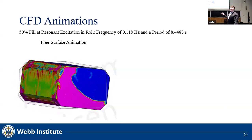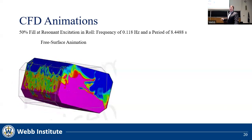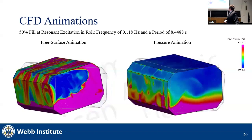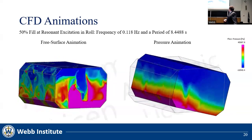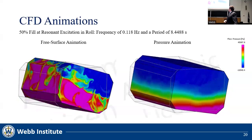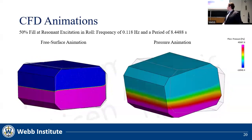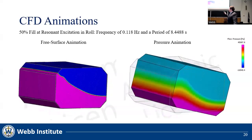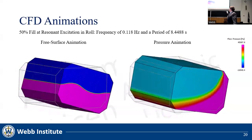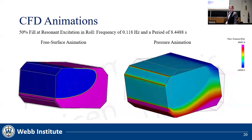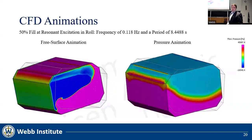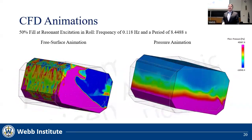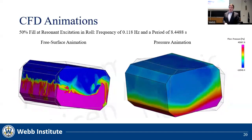The 50% fill simulation took about 16 hours to run, while the next one took 36 hours. In that animation, you can see large impact pressures when the wave crashes against the tank wall. Notably, gas entrainment is visible within the fluid volume, and higher pressures are found within those gas regions from the pressure animation. Also of note is the negative pressure caused by local vacuums due to sloshing.